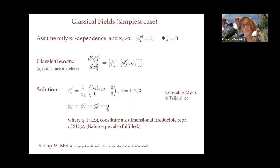For the simplest solution, three of the scalars have classical fields equal to zero, whereas the other three have classical fields that look like 1/x3 out in front and then a k×k matrix in the upper left-hand corner. These three k×k matrices T_i, where i runs from 1 to 3, constitute a k-dimensional irreducible representation of SU(2).